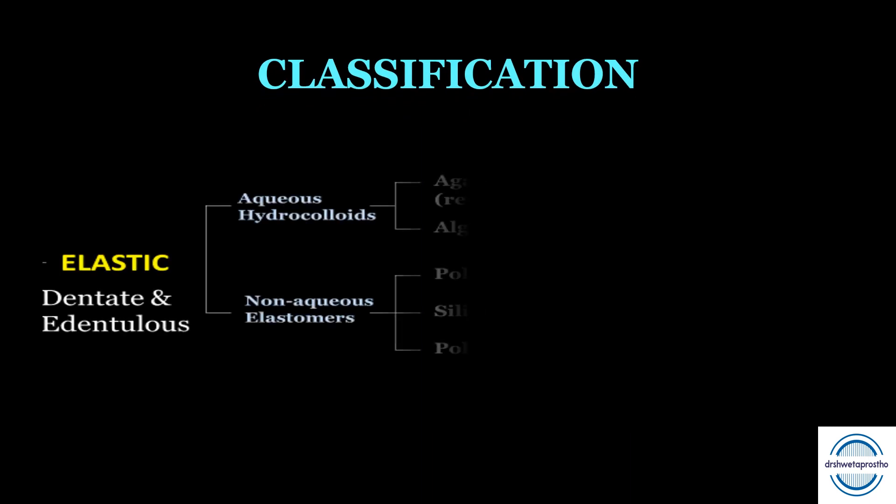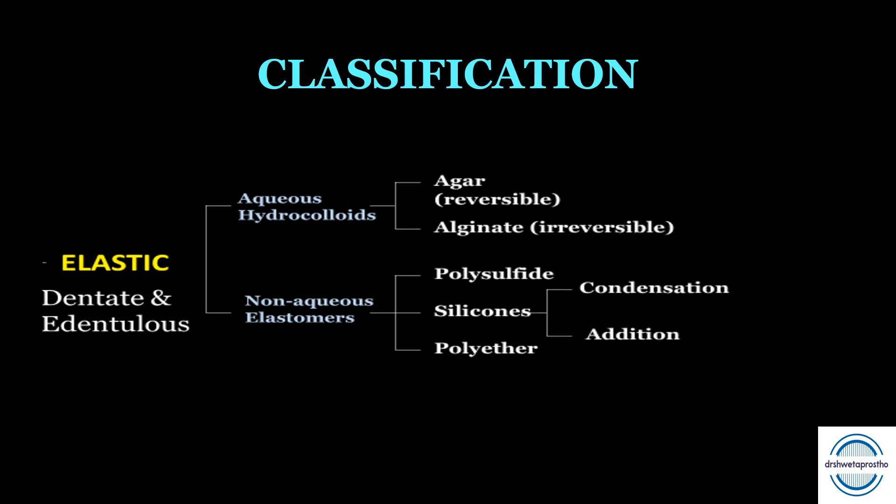Going back to the classification: elastic impression materials can be of two types — the aqueous hydrocolloids and the non-aqueous elastomers. The aqueous hydrocolloids can be further of two types depending on the setting reaction: agar, which is reversible, and alginate, which is irreversible. The non-aqueous elastomers can be polysulfides, silicones, and polyether. Silicones can be further condensation and addition silicone. These all set by the polymerization reaction.